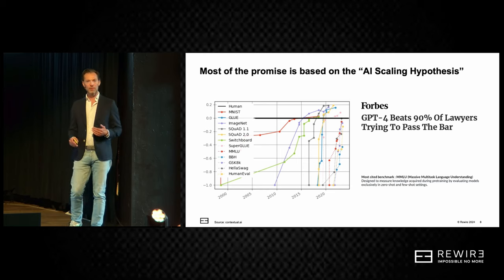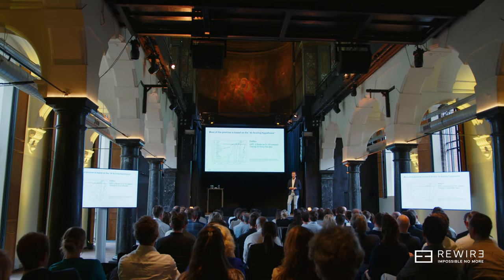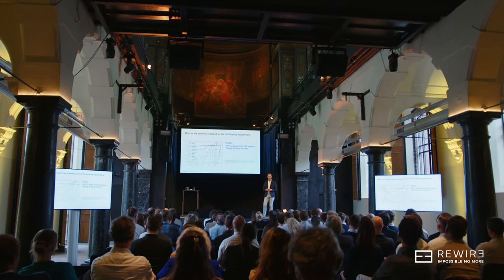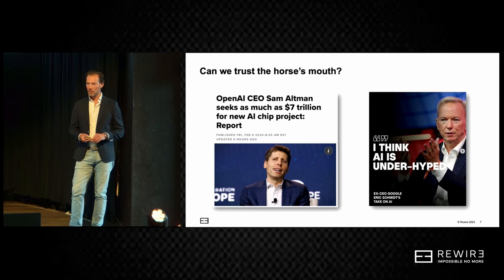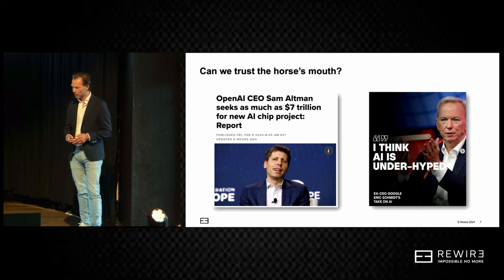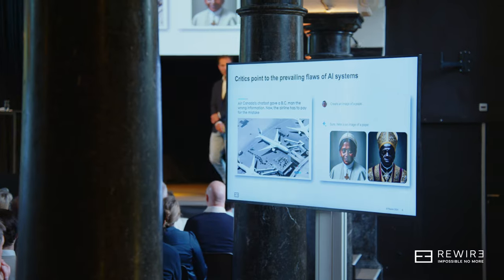Measuring AI performance — especially generative AI — is not easy, because how do you determine if a response is actually accurate? But in any case, we see the field progressing. We've all seen news around models beating bar exams and so on. The key thing is that all this progress is basically based on one hypothesis: the AI scaling hypothesis. That means as long as we throw more data and compute at it, we'll advance.